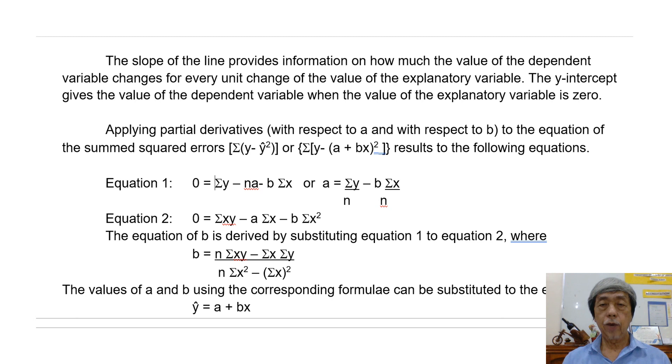The slope of the line provides information on how much the value of the dependent variable changes for every unit change of the value of the explanatory variable. The y-intercept gives the value of the dependent variable when the value of the explanatory variable is zero.